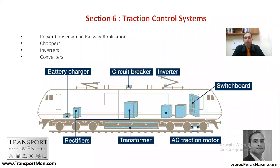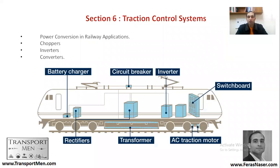This is what we'll be discussing: power conversion in railway applications — choppers, inverters, and converters. 'Converters' is a general word; it can be a transformer, inverter, chopper, or rectifier. Here we have a train with a pantograph, a transformer, and a rectifier. The AC current comes from the overhead line, goes through the transformer first, then the rectifier second, then the inverter third, to the traction motors.